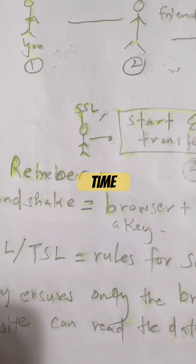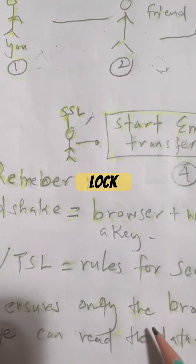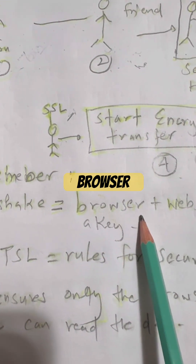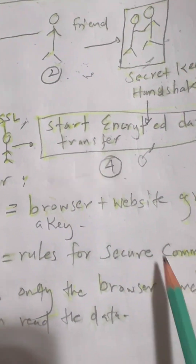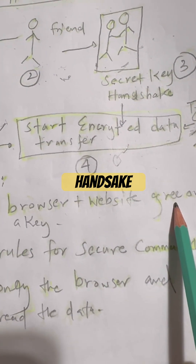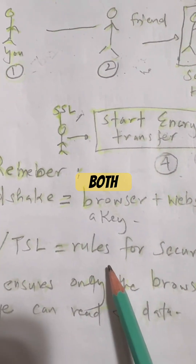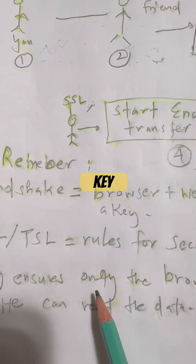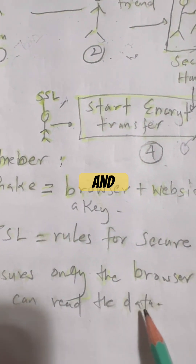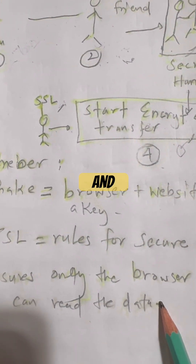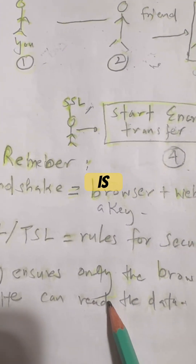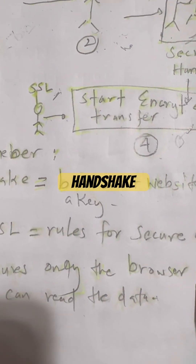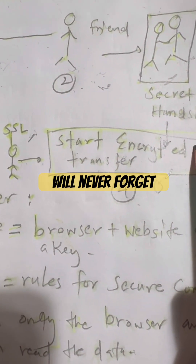So next time you see the lock icon, remember: your browser and website have done a secret handshake, both share a secret key, and your data is safe, private, and encrypted. This is SSL and TLS — the secret handshake of the internet. So simple, you will never forget.